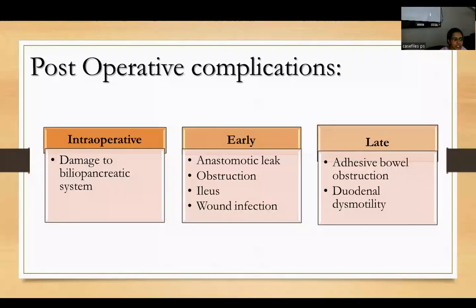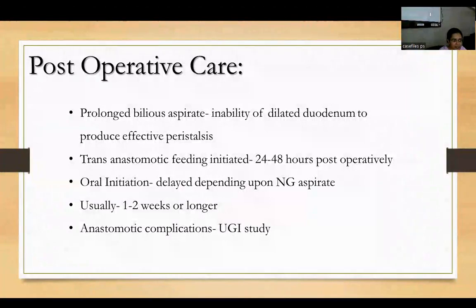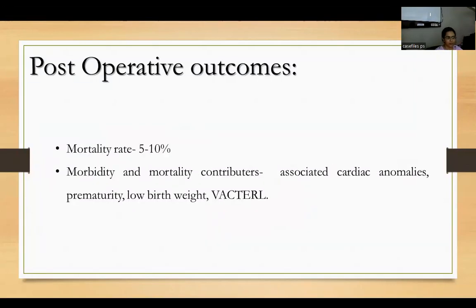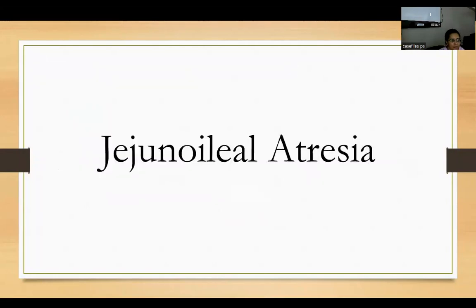Postoperative complications for duodenal atresia include intraoperative damage to the biliopancreatic system; early complications of anastomotic leak, obstruction, ileus, and wound infection; and late complications of adhesive bowel obstruction and duodenal dysmotility. Postoperatively, there is prolonged biliary aspirate from the nasogastric tube. If a trans-anastomotic tube has been placed, early initiation of feeding can be done; otherwise oral feeds are delayed one to two weeks. The mortality rate is 5 to 10%, with main contributors being associated cardiac anomalies, prematurity, low birth weight, and chromosomal anomalies.